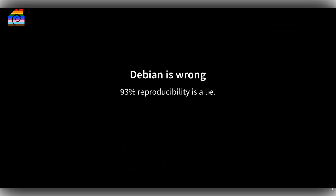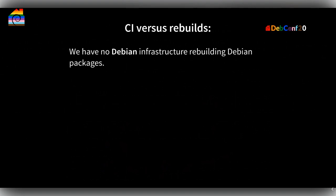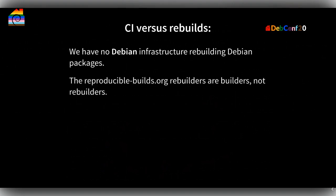Many people think that Debian is 93% reproducible, and that is certainly a lie — because that 93% figure comes from our CI results, where we build packages twice, compare them, and say you can rebuild this package. But we don't compare with what Debian actually distributes. We don't have any Debian infrastructure or reproducible builds infrastructure where we rebuild packages and compare them against what's distributed.